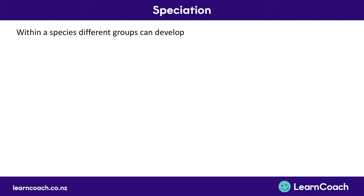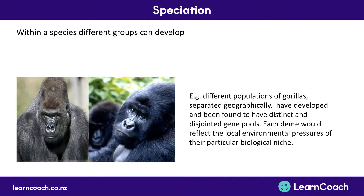Within a species, different groups can develop. For example, if we look at gorillas, you get the west lowland gorillas and the mountain gorillas. They've become so separate that some people are now saying they're actually separate species. Because they live in different environments, they have different gene pools and different kinds of natural selection, and so they evolve differently.